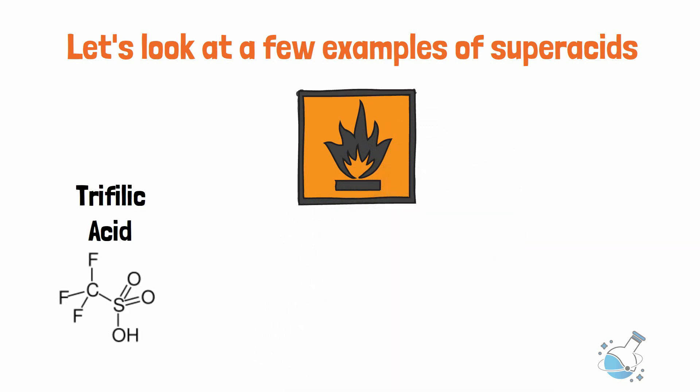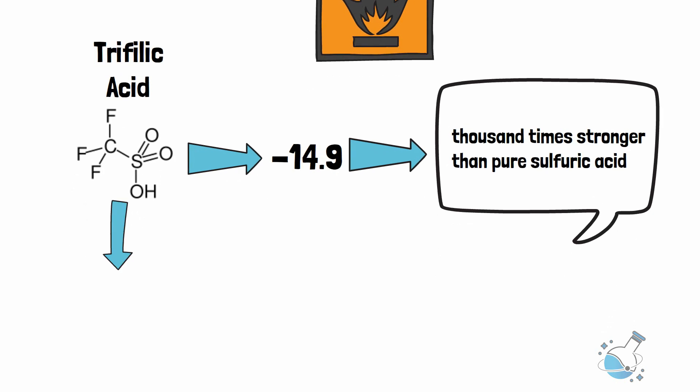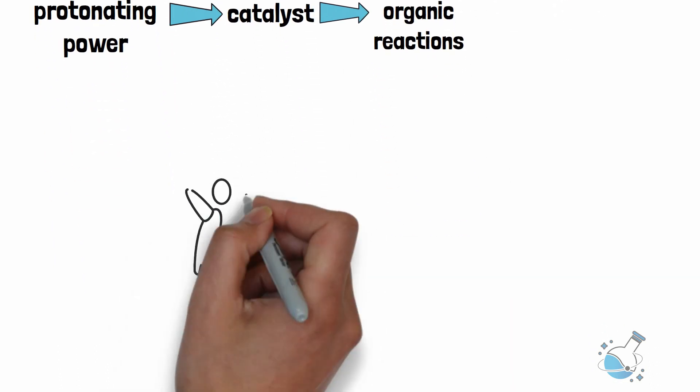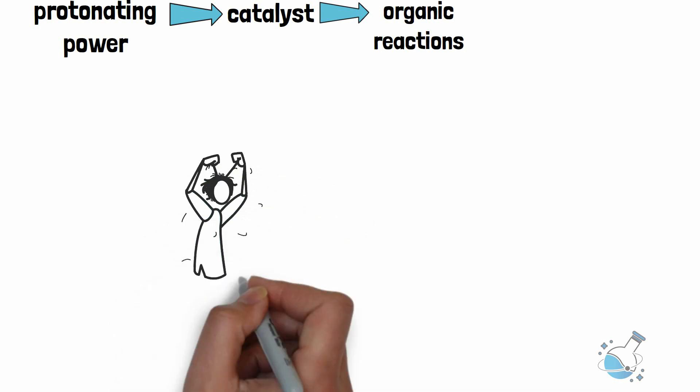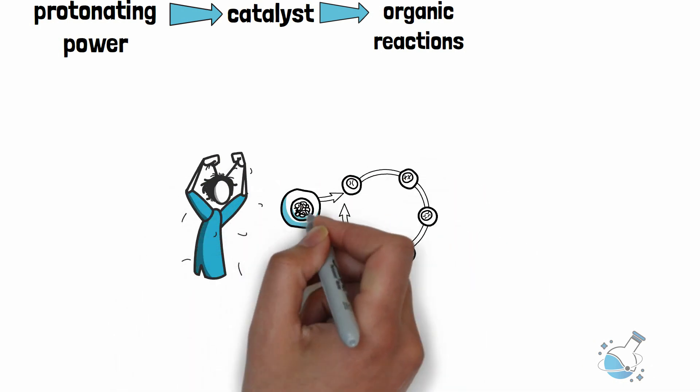Triflic acid is a superacid with an H0 value of minus 14.9, which means that it is a thousand times stronger than pure sulfuric acid. It has strong protonating power and is used as a catalyst in many organic reactions where hydrochloric acid or sulfuric acid does not work. If it touches the skin, it will give immediate burn to the skin and even damage tissues underneath. If inhaled, it causes fatal spasms. Even so, it doesn't belong in the top row.